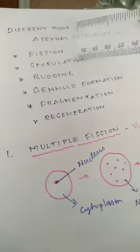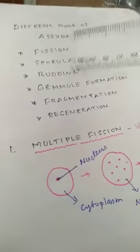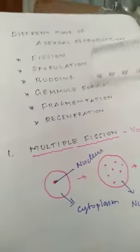The different modes of asexual reproduction are: Fission, Sporulation, Budding, Gemmule Formation, Fragmentation, and Regeneration.